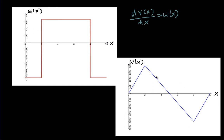We verified that the slope of v was equal to w. So there is a relationship that v is the integral of w, or w is the derivative of v, actually the negative derivative of v.